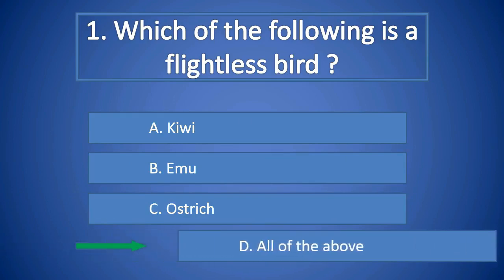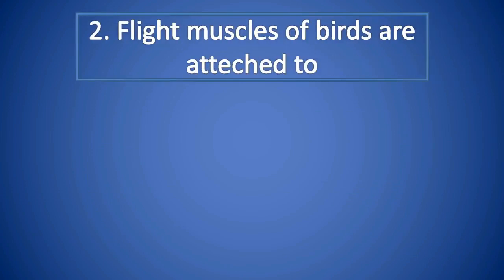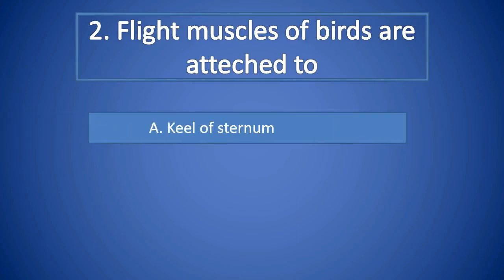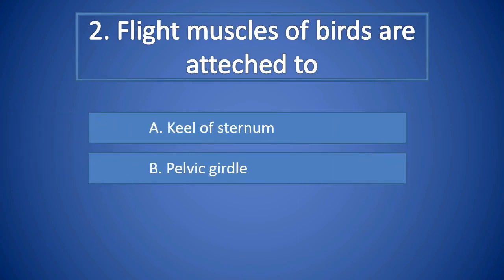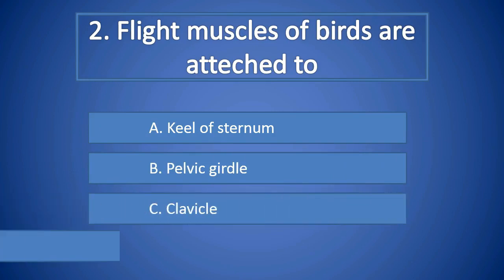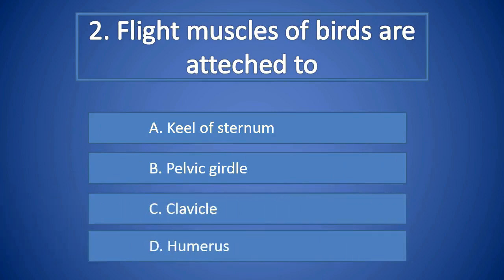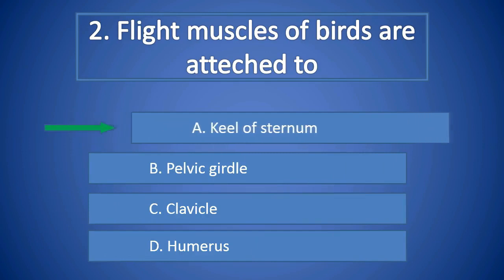Question Number 2: Flight muscles of birds are attached to A. Keel of sternum, B. Pelvic girdle, C. Clavicle, D. Humerus. Right answer is A. Keel of sternum.